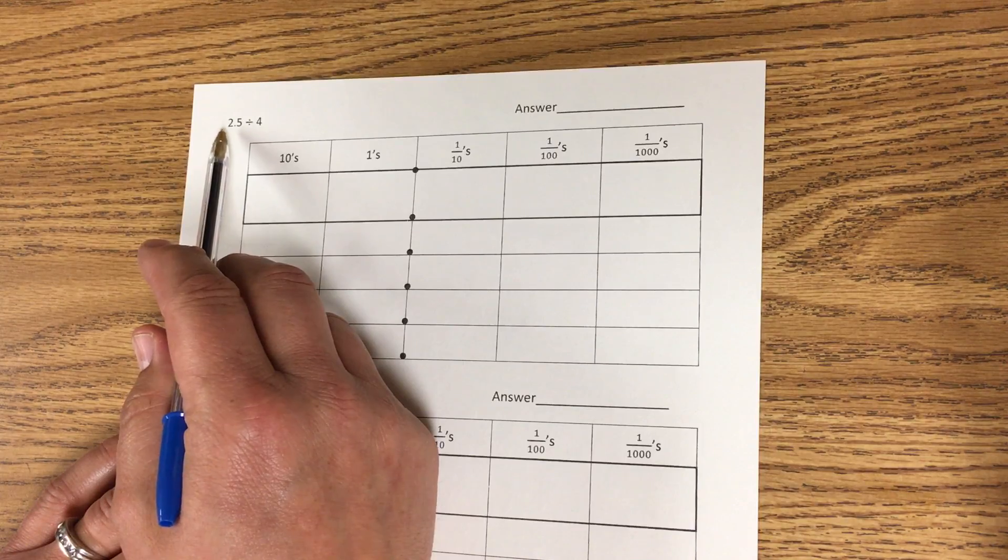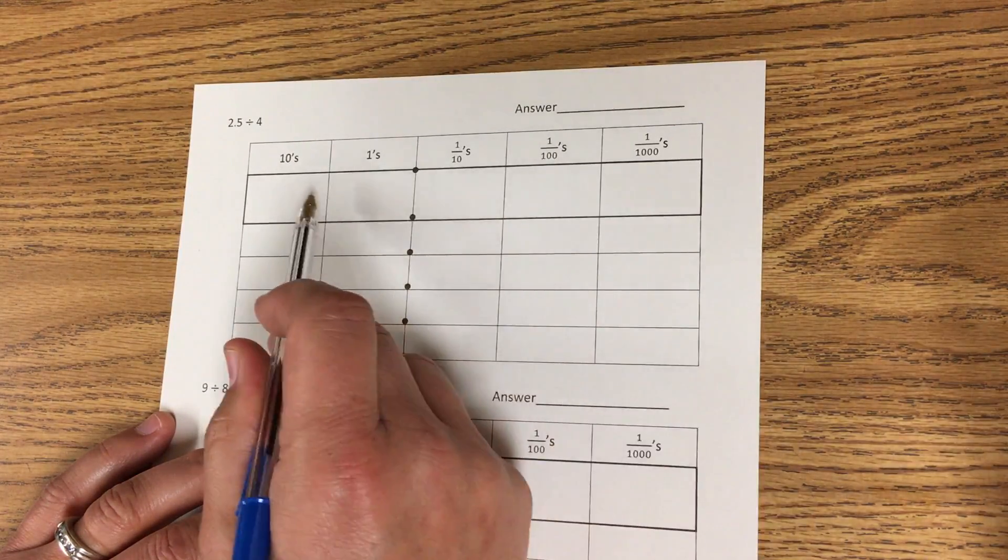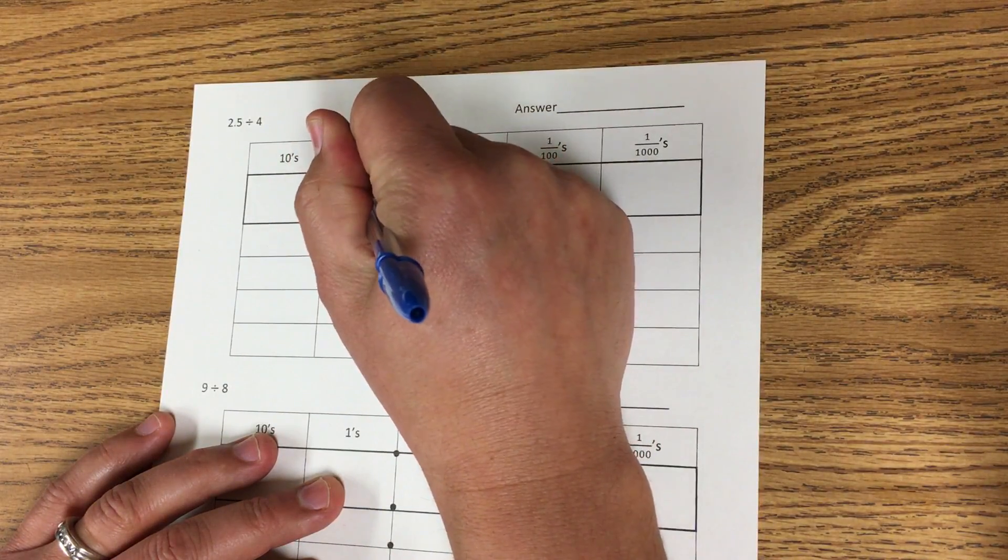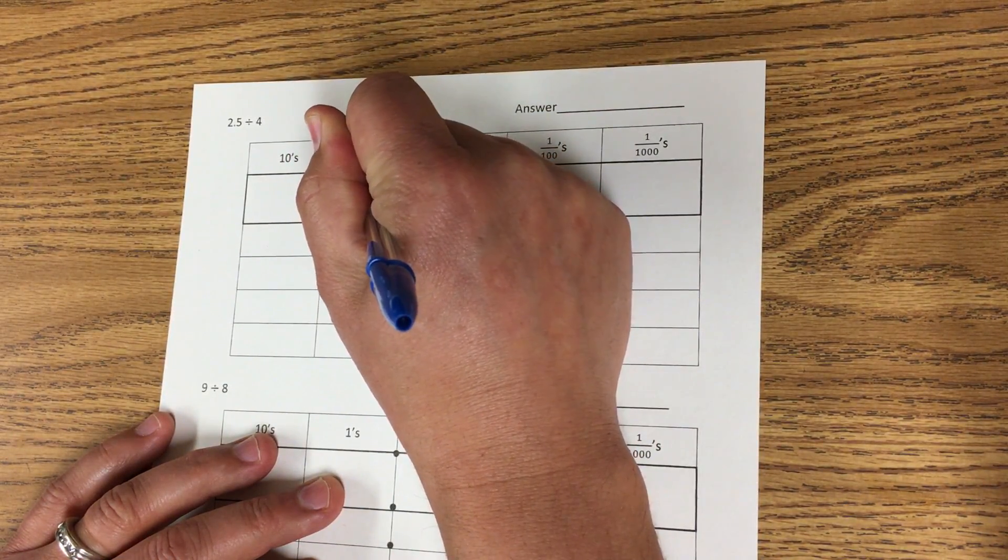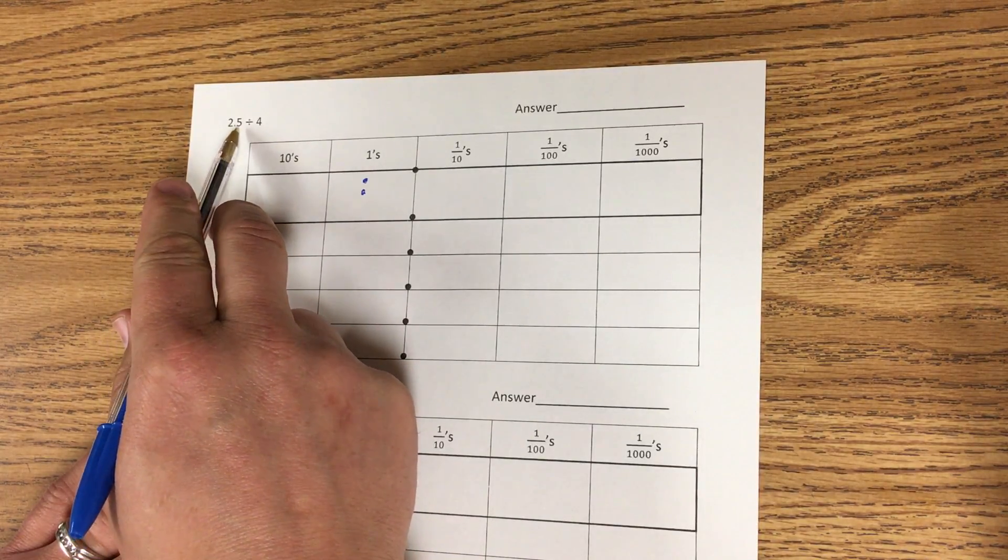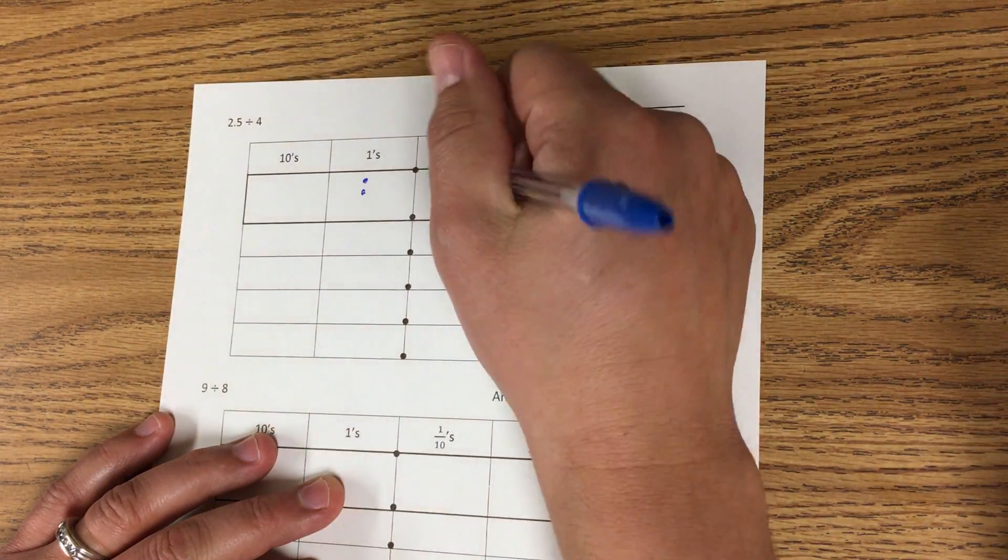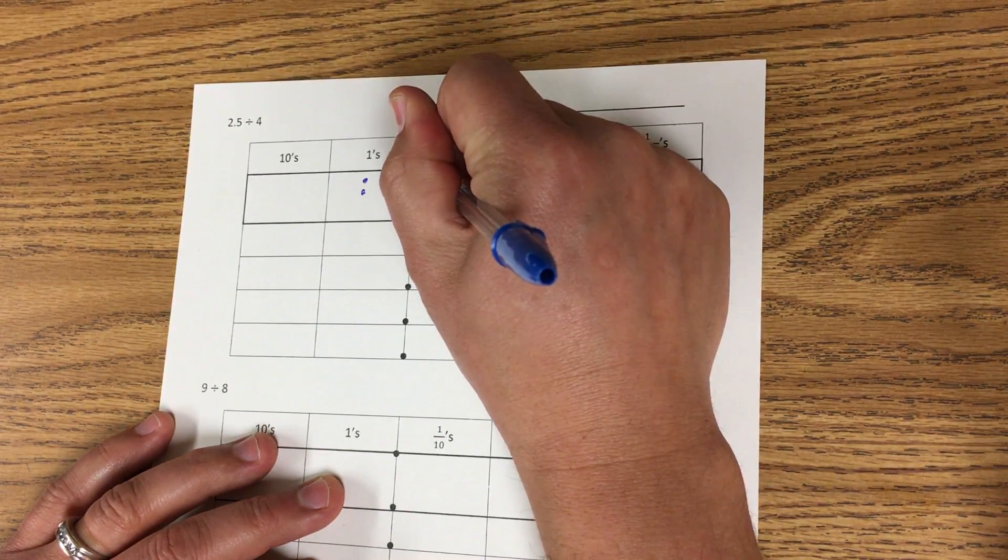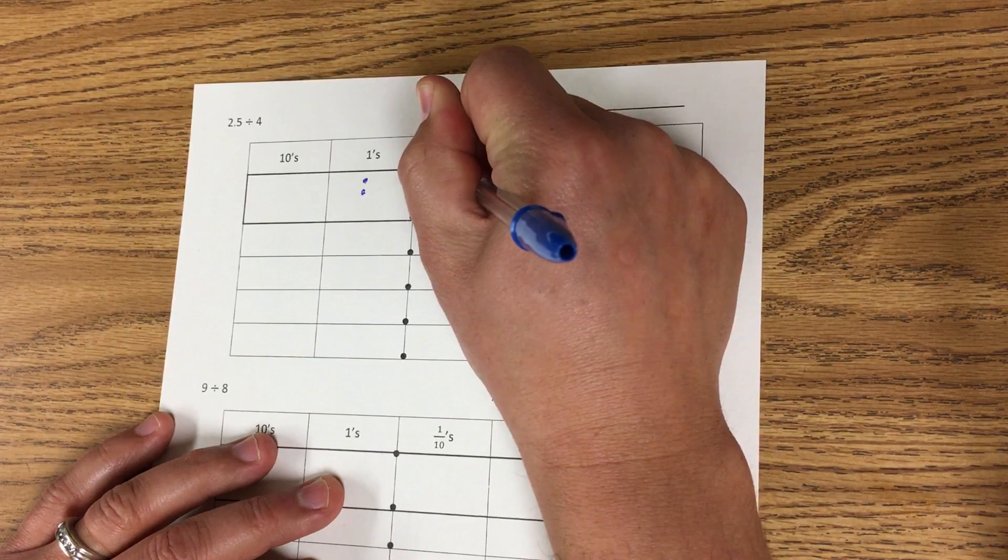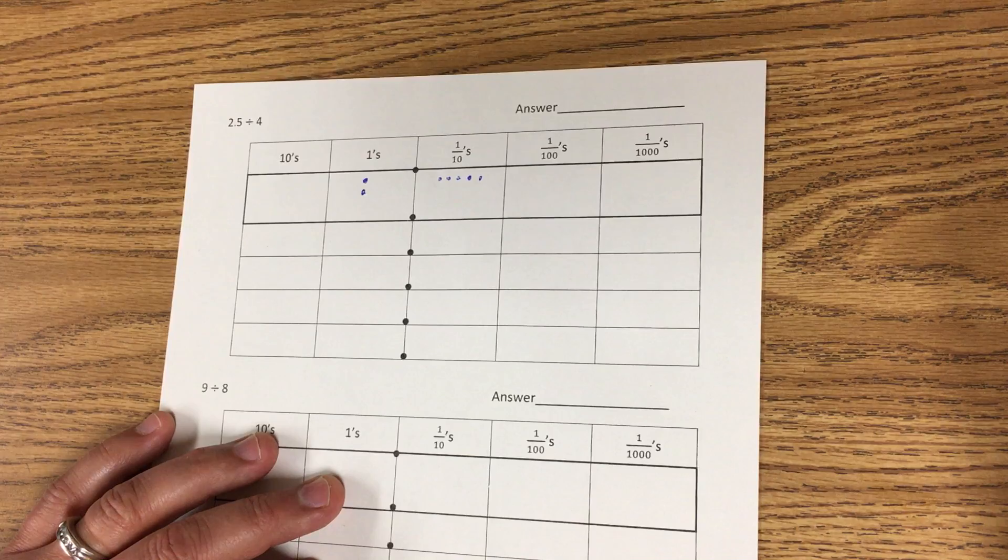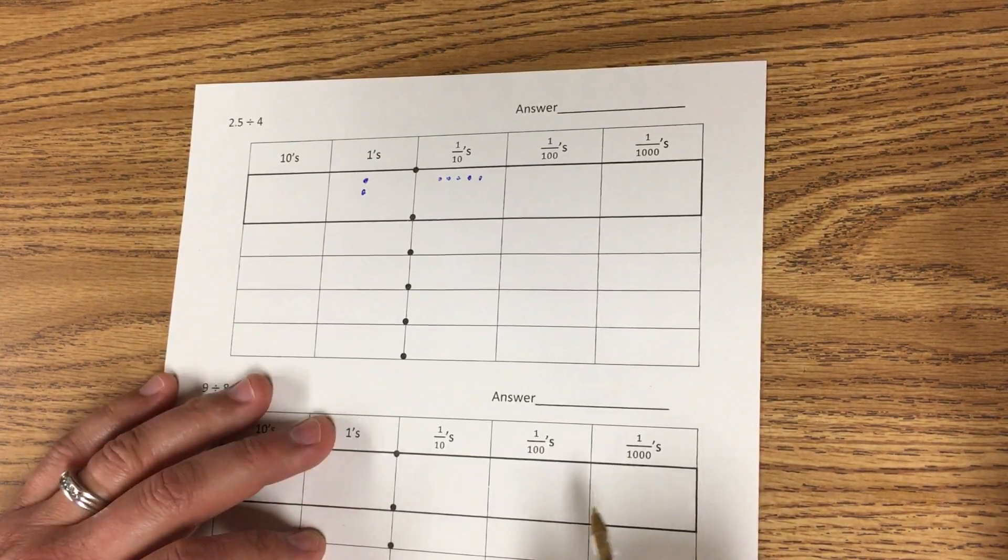What I'm gonna do is I'm gonna take my dividend and put it in here. So I have two ones, so I'm gonna make two dots in the ones place. And then I have 5 tenths, so over here in the tenths I'm gonna make five dots. So I'll just go 1, 2, 3, 4, 5. Like that. And now I'm ready to start.